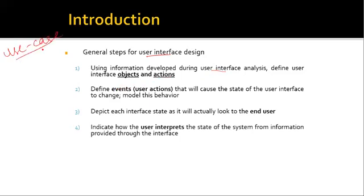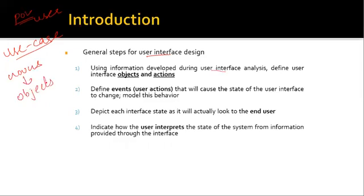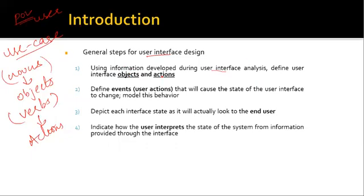A use case diagram is a behavioral diagram that shows the different aspects of the user — it shows the system from the user's point of view. These use cases are parsed such that all your nouns become your objects and all the verbs become the actions. So two things: nouns become objects and verbs become actions. From this you identify the different user interface objects and actions.